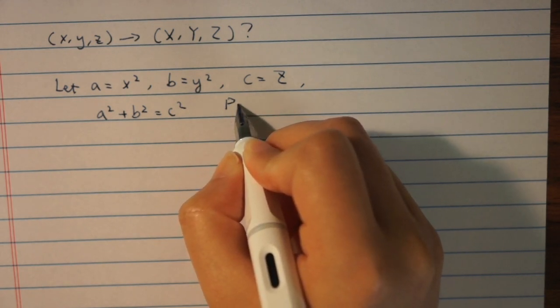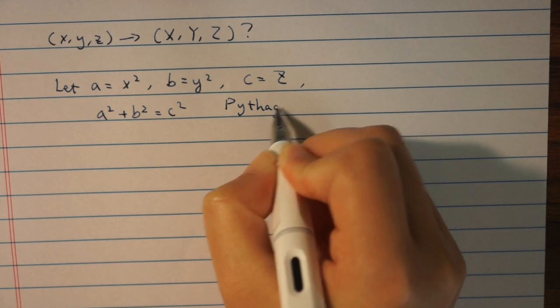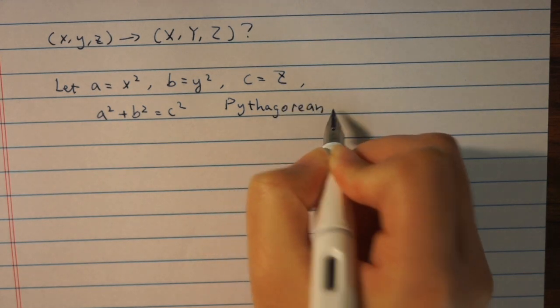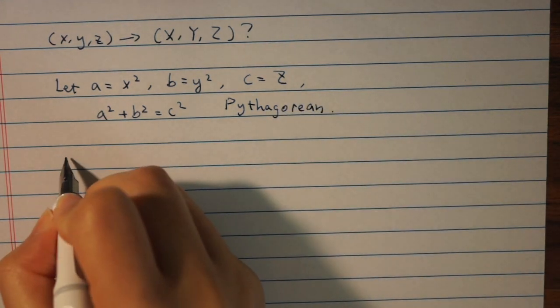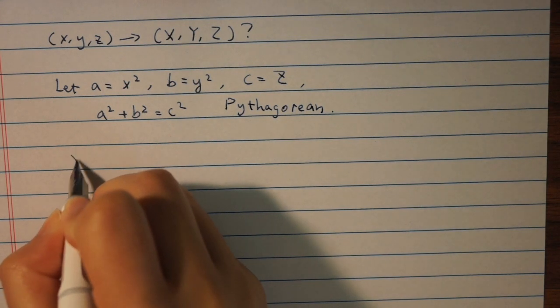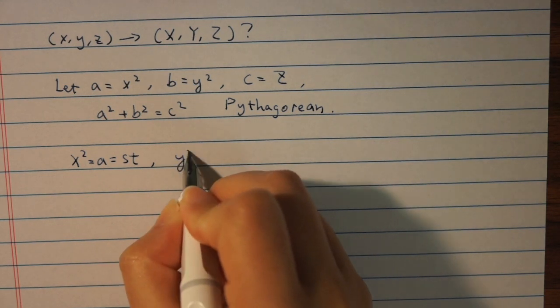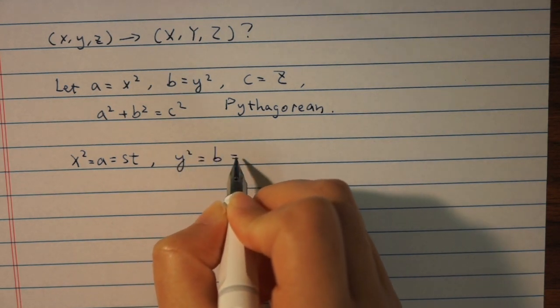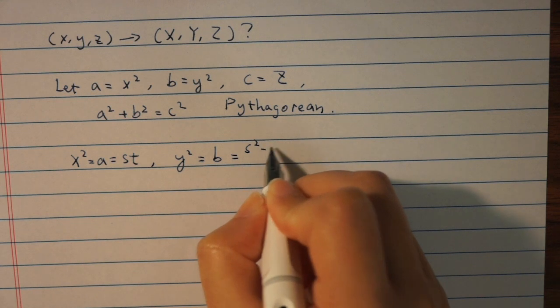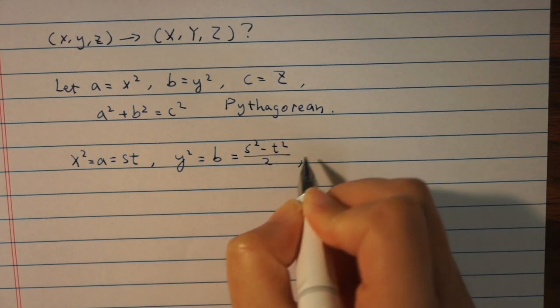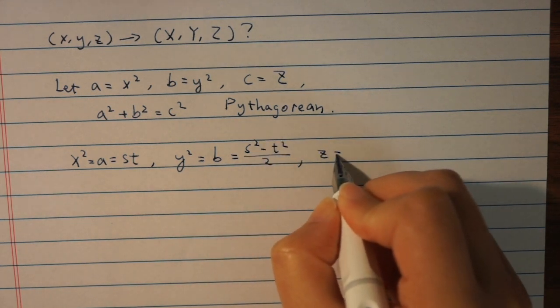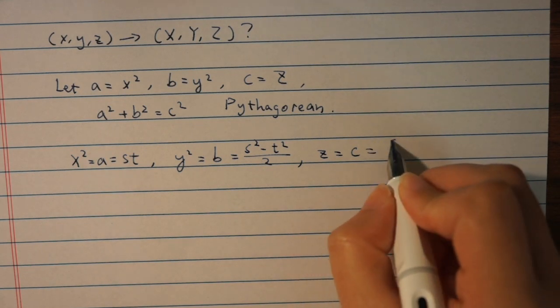Because we know how to form a Pythagorean triple, we know there exist odd integers s and t such that x squared equals a equals st, y squared equals b equals s squared minus t squared over 2, and z equals c equals s squared plus t squared over 2.